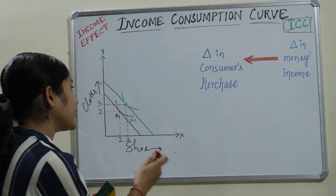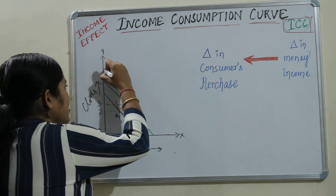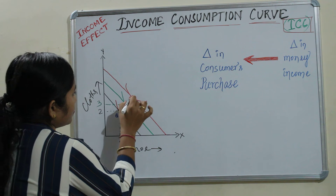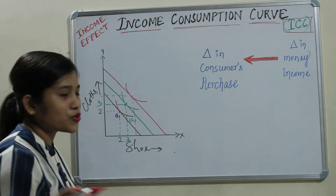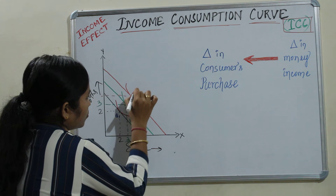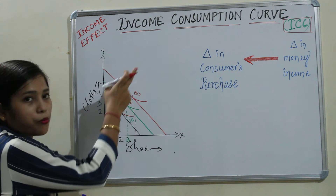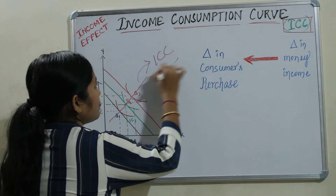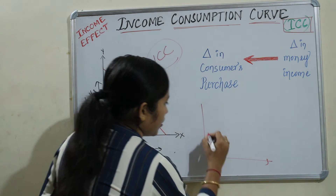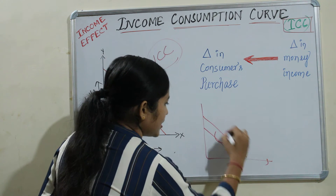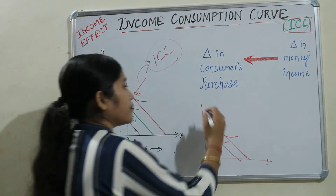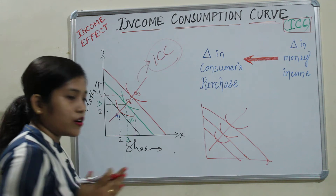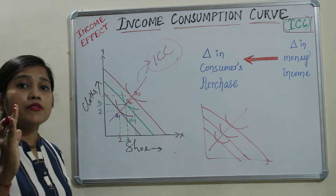Again your income got increased, and the indifference curve shifts further, showing you will go on purchasing more clothes and more shoes. So these are Q1, Q2, and Q3. If I join these three points, it is a straight line. This straight line is called the income consumption curve. When your income increases, your budget line shifts and you purchase more of both goods, and all the equilibrium points joined together form the income consumption curve.